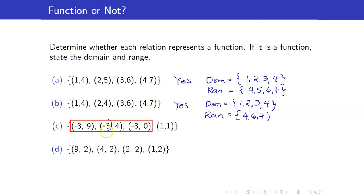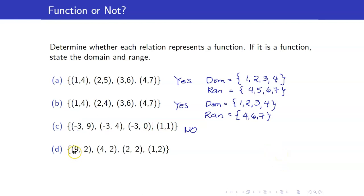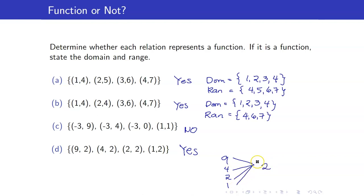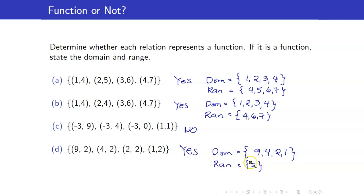For the next item, the same first coordinate was repeated, so this is not a function because negative 3 goes to 9, it also goes to 4, and it also goes to 0. Lastly, for the set with pairs (9,2), (4,2), (2,2), (1,2): this is still a function because no first coordinate was repeated. It's okay for all elements 9, 4, 2, 1 to go to the same element 2. The domain is {9, 4, 2, 1} and the range consists of exactly one element, {2}.